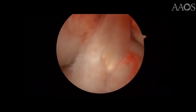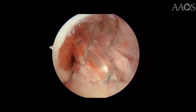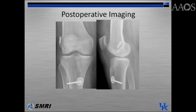Final arthroscopic pictures after passing the graft show good placement of the graft within the native anatomic ACL footprints. Postoperative imaging shows anatomic placement of the femoral and tibial tunnels. For femoral fixation, a cortical suspensory device was used. On the tibial side, an interference screw was used for primary fixation and back-up fixation was achieved using a bicortical large frag metal screw with a washer.